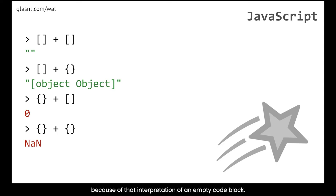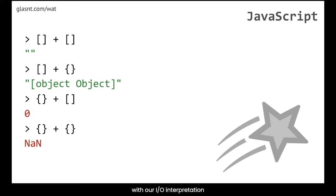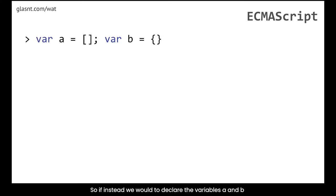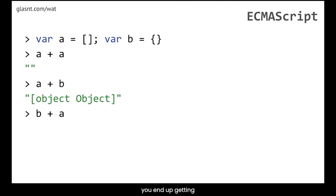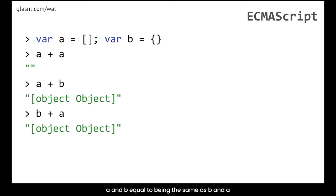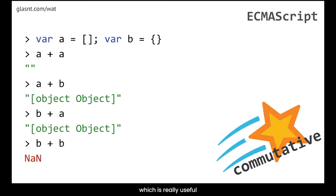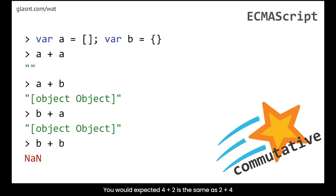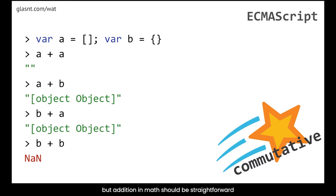However, that's not completely accurate, because this interesting behavior happens because of that interpretation of an empty code block. What we should be doing is using variables, since there are interesting I/O interpretation issues depending on where we're actually running this code. If instead we declare variables A and B as these two types and step through the operations, A+B equals B+A — commutativity — which is what you would expect, since four plus two equals two plus four.